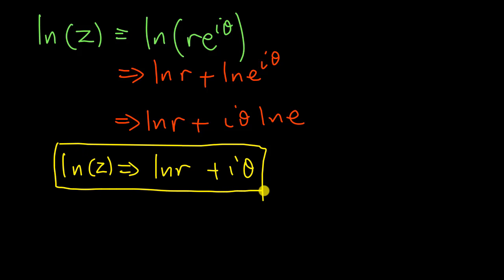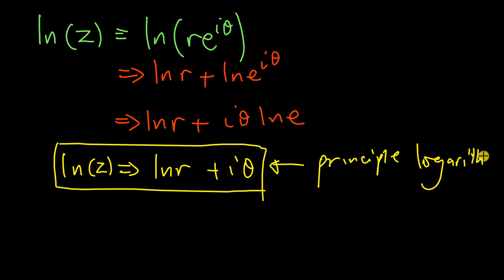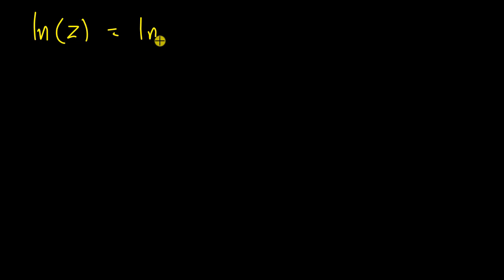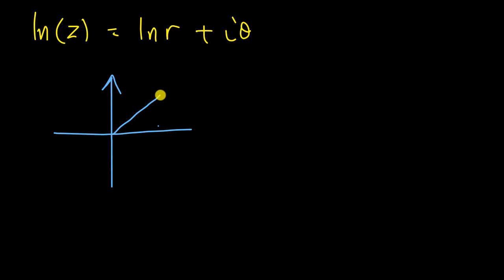So there we go. We call this the principal logarithm of the complex number, because we have used the principal argument theta. The natural log of z equals ln(r) plus i theta, where theta is the principal argument.